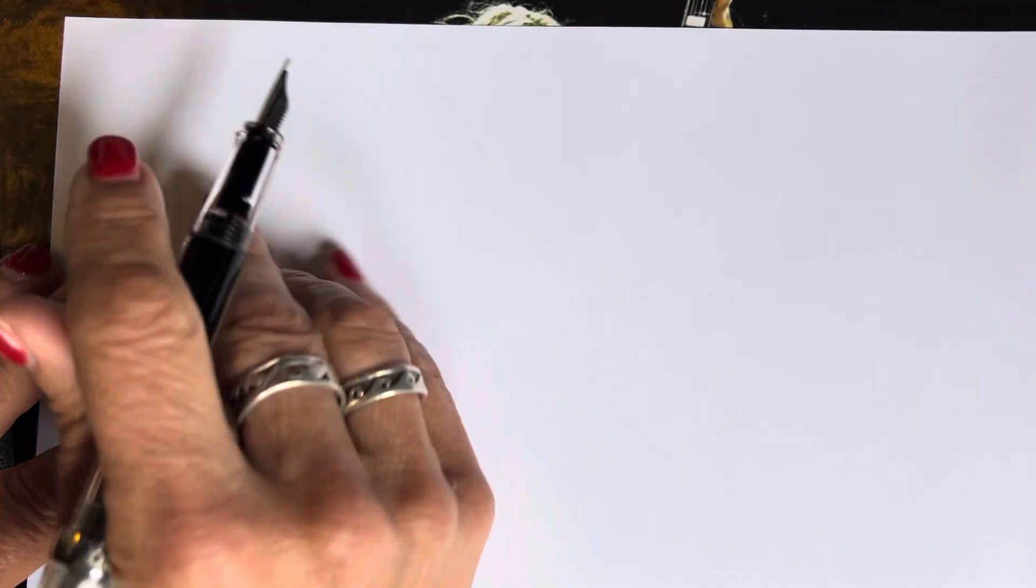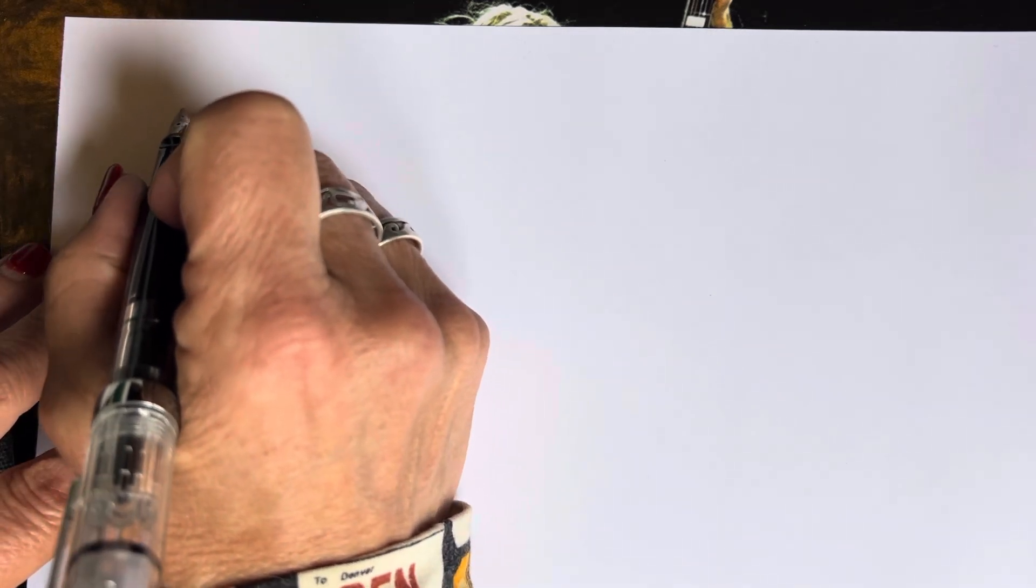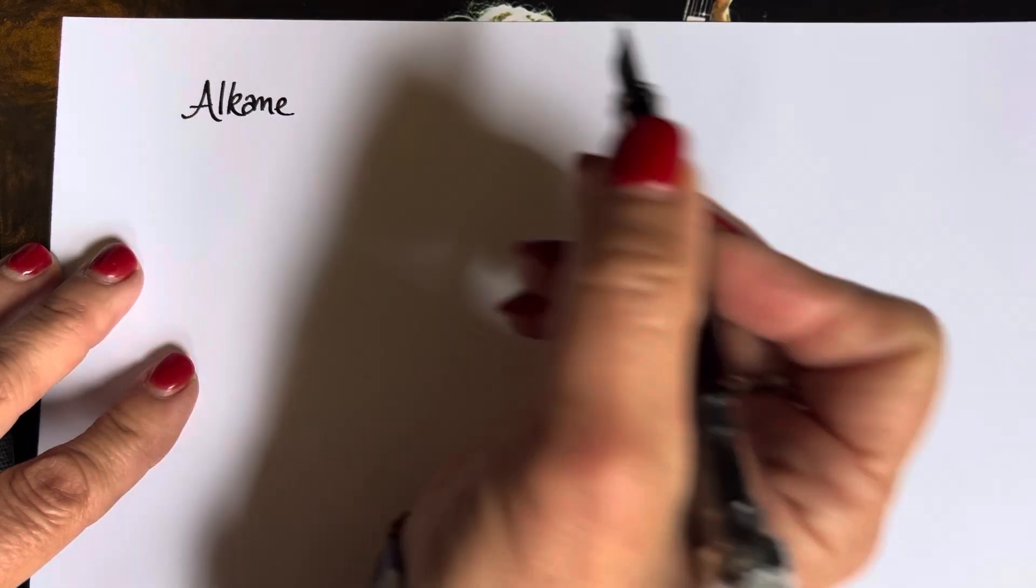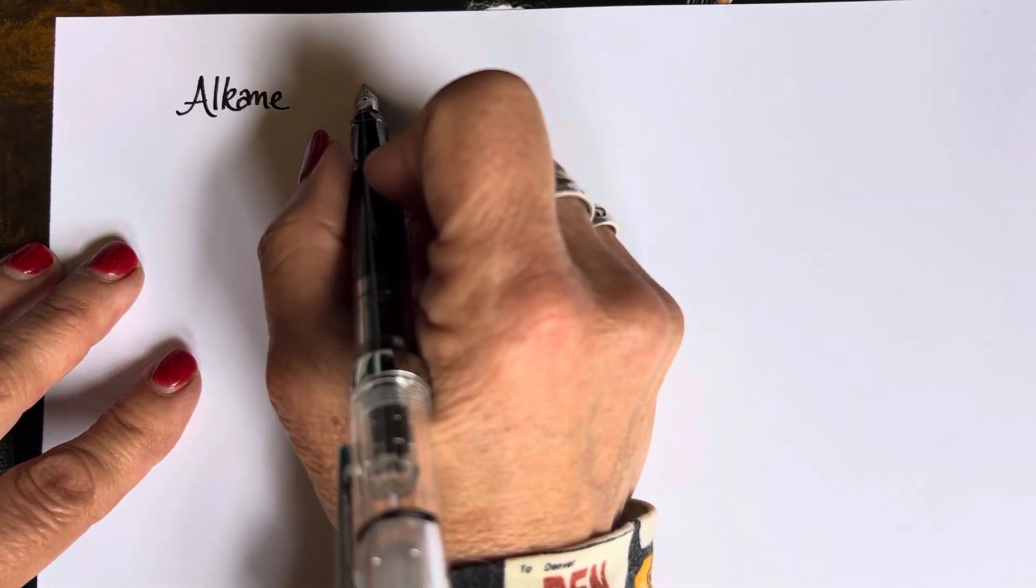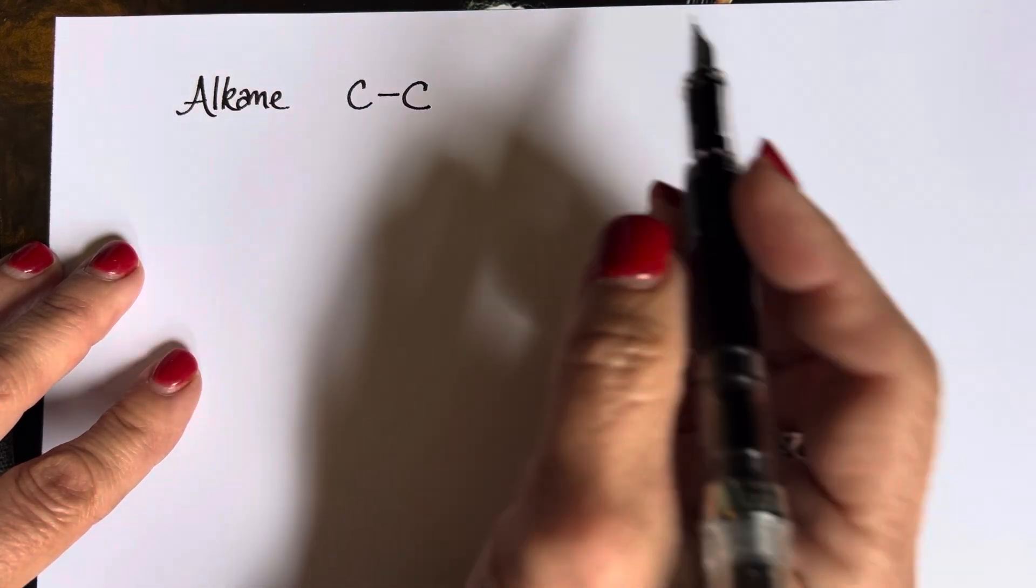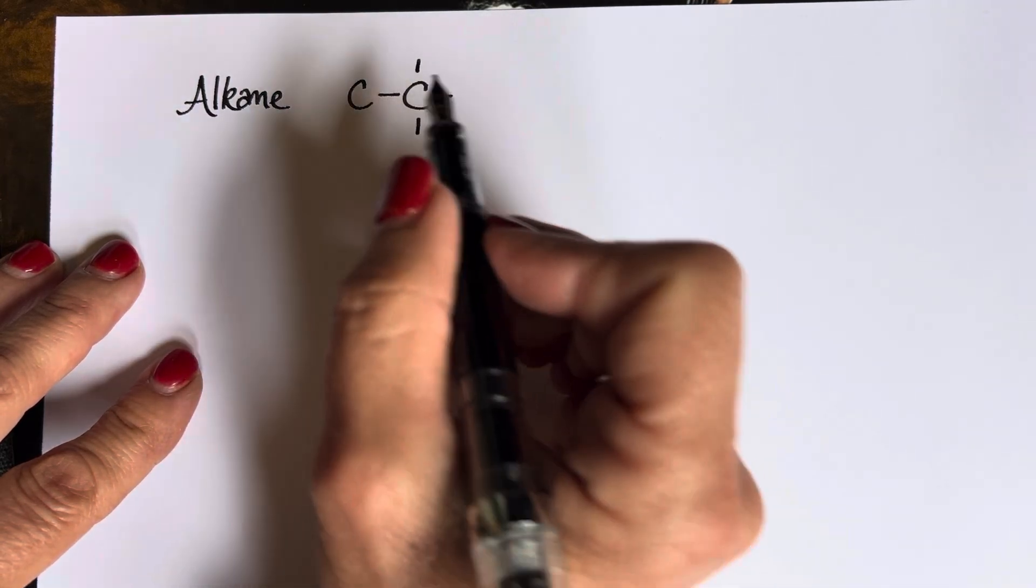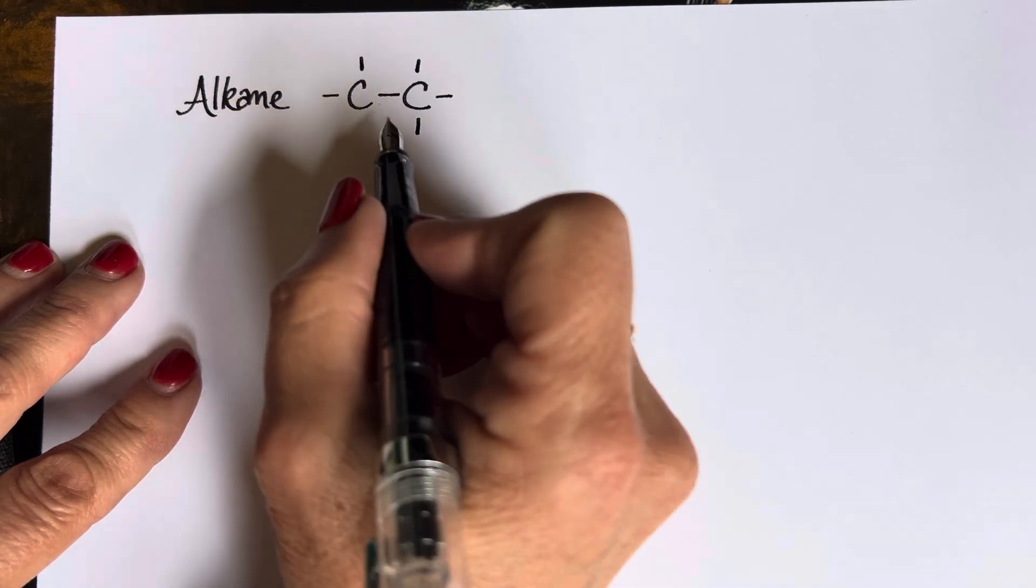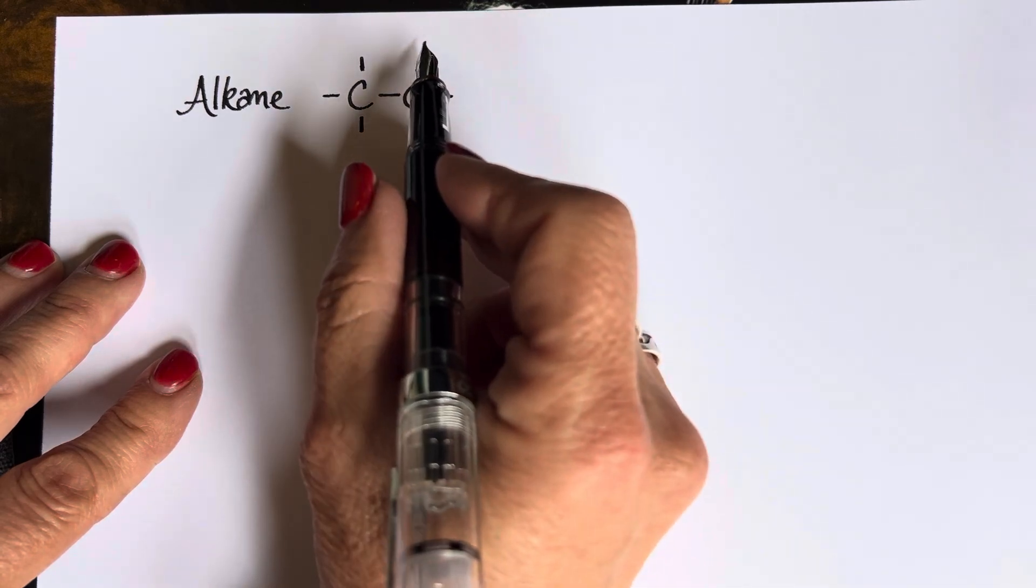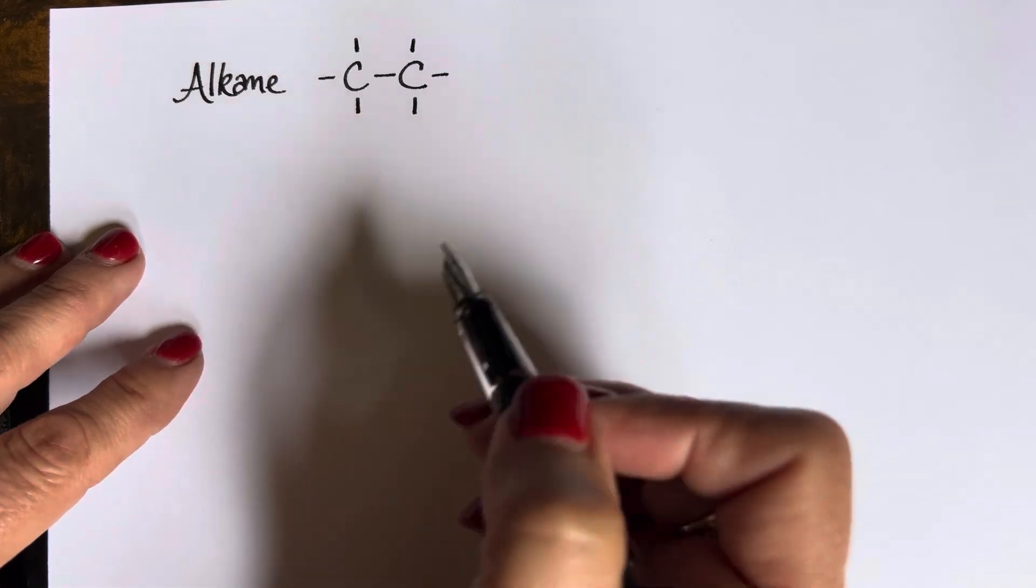Starting with the baseline kind of structure, which is an alkane. Alkane has just single bonds between our carbons. And so of course, each of these carbons, I'll draw them in as an example. They have single bonds to other things, such as hydrogens or other carbons, things like that. There's our alkane.